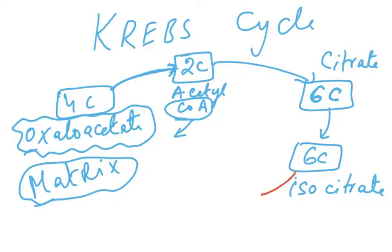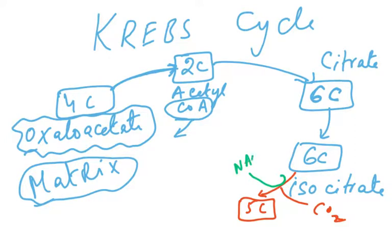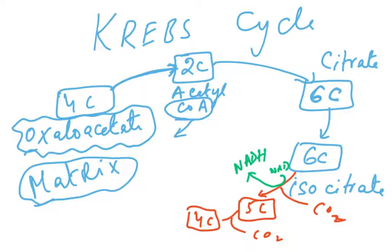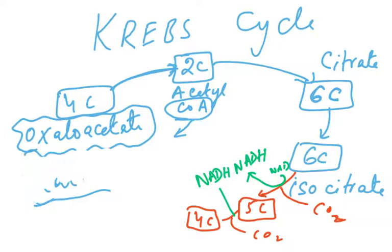The six-carbon citrate is converted to six-carbon isocitrate, then to five carbon — here a carbon dioxide exits and a hydrogen is removed, so NADH (reduced NAD) is formed. Then five carbon is converted to four carbon — again a carbon dioxide exits and another NADH is formed. So six carbon to five carbon is decarboxylation, and five carbon to four carbon is again decarboxylation.